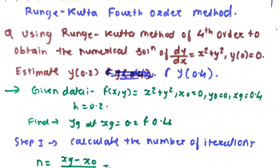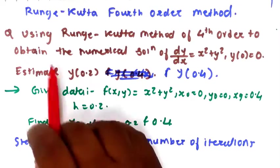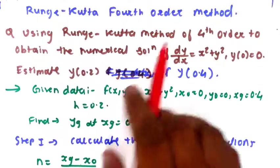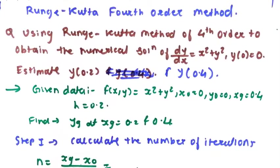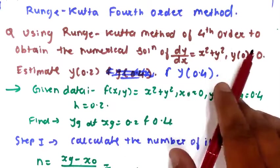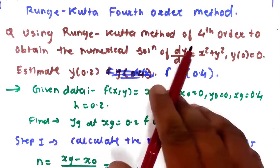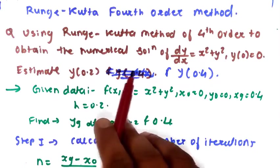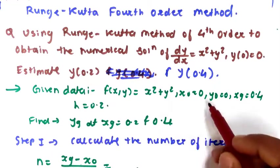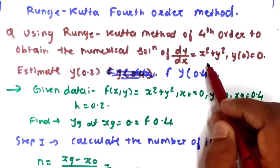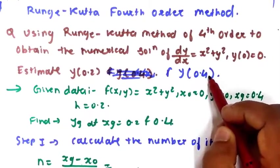Hello everyone. In this video we are going to solve a numerical on the Runge-Kutta 4th order method, that is the RK 4th order method. We will use the RK method of 4th order to obtain a numerical solution. The equation given is dy/dx equal to x² plus y².